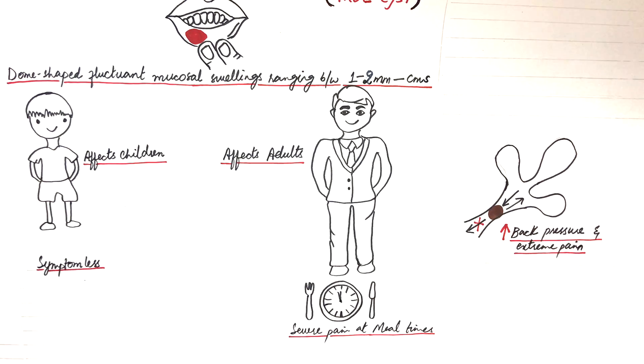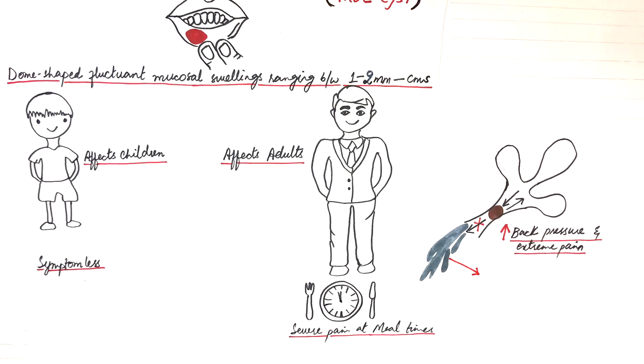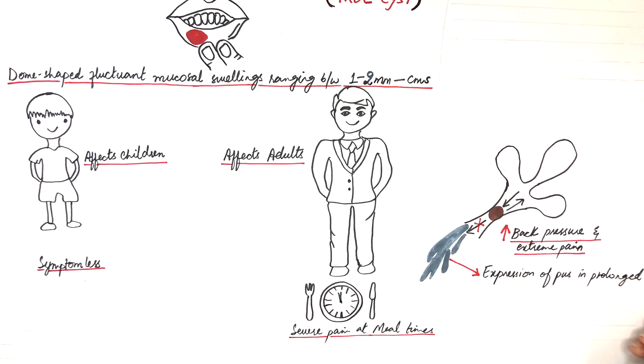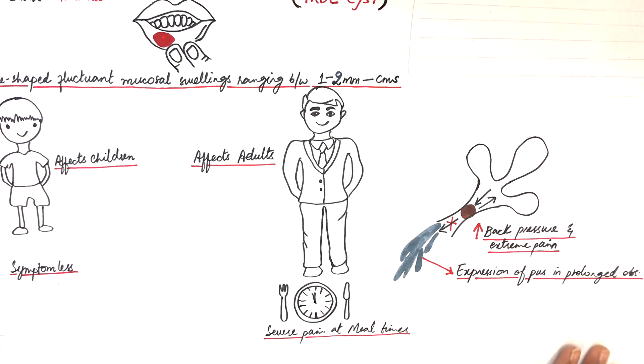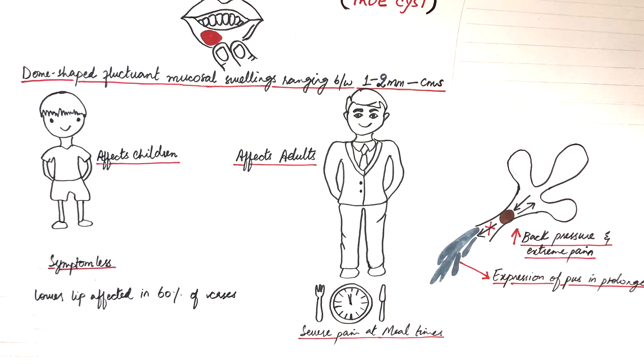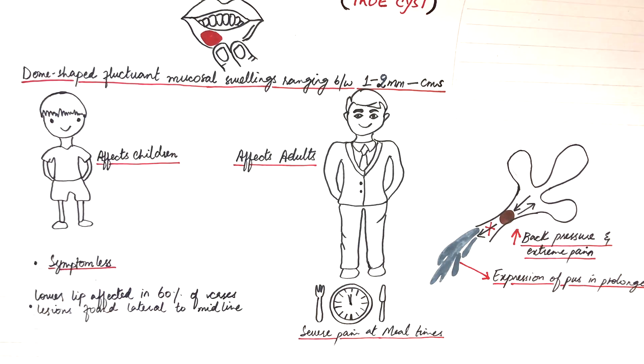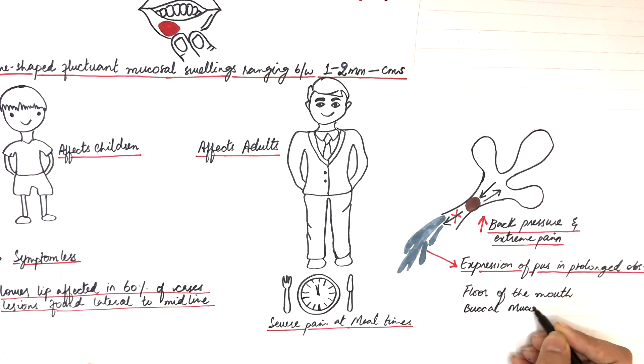In cases of prolonged obstructions, a good medium for bacterial growth is always there, and this leads to inflammation which results in the expression of pus from the ductal orifice. In about 60% of cases, the site most commonly involved in extravasation type is the lower lip, and lesions in the lower lip are usually found lateral to the midline. The most common site in mucus retention cysts is the floor of the mouth, the buccal mucosa and the lips.